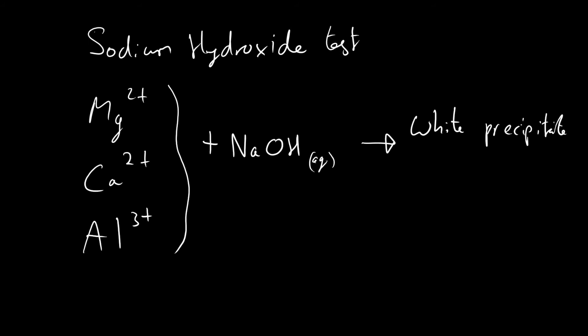That means we have in that unknown compound either magnesium, calcium, or aluminum ions. Then we need to distinguish between those.